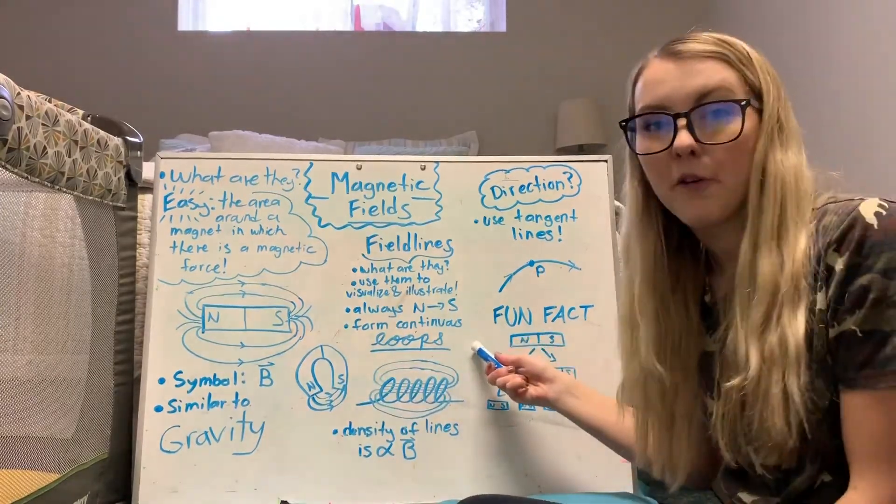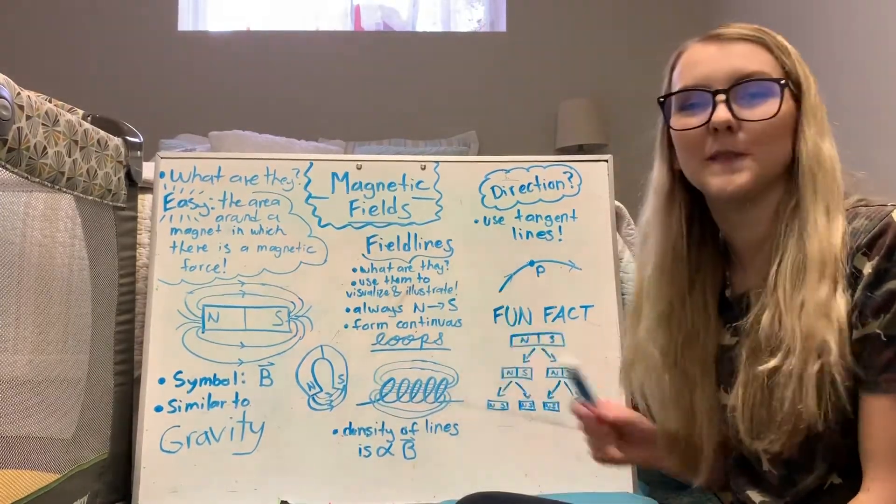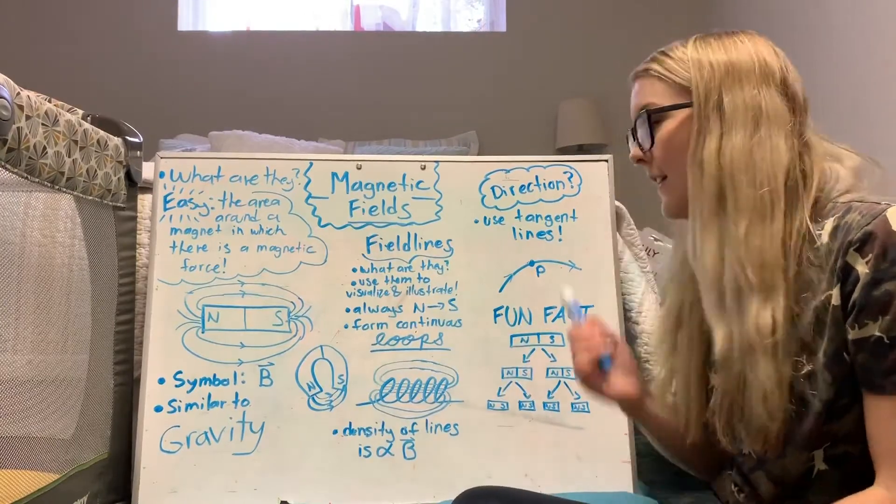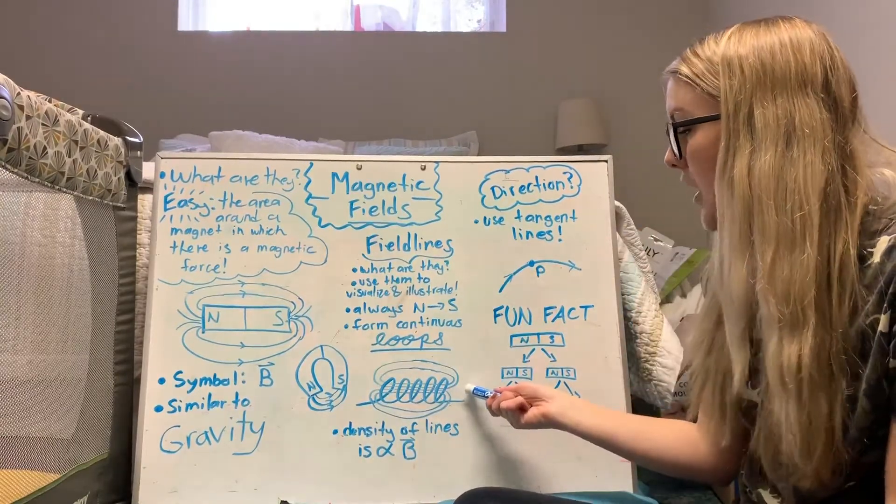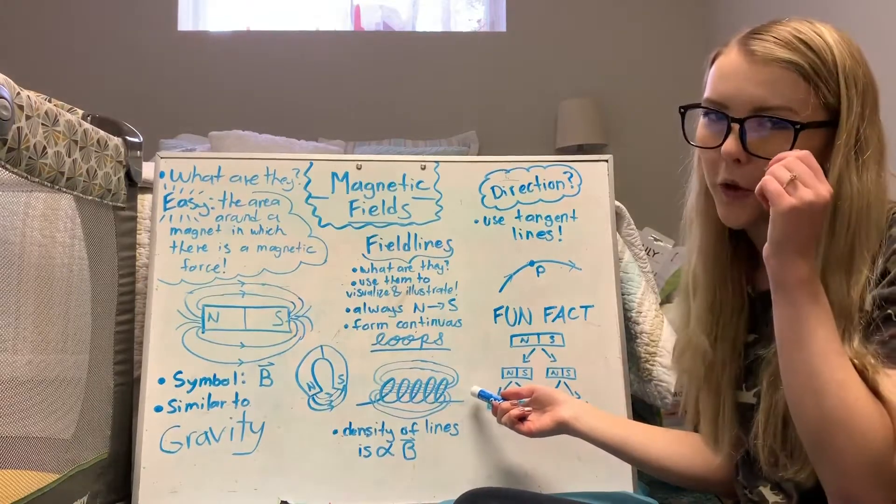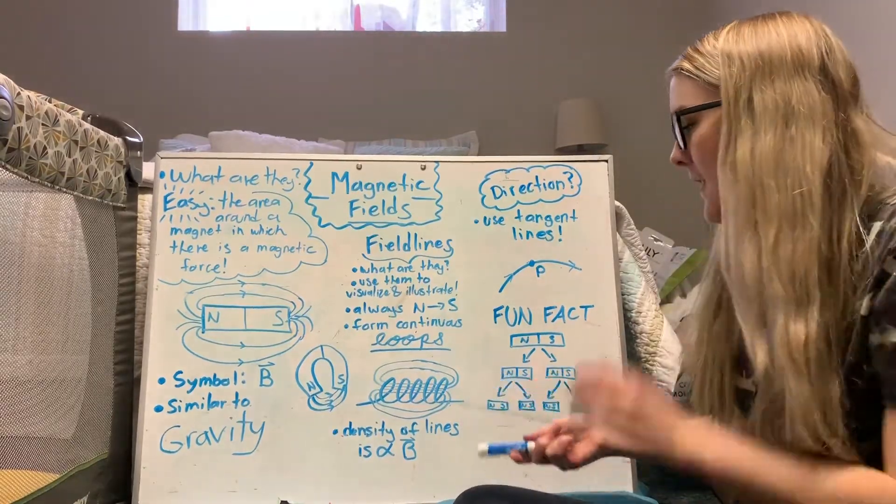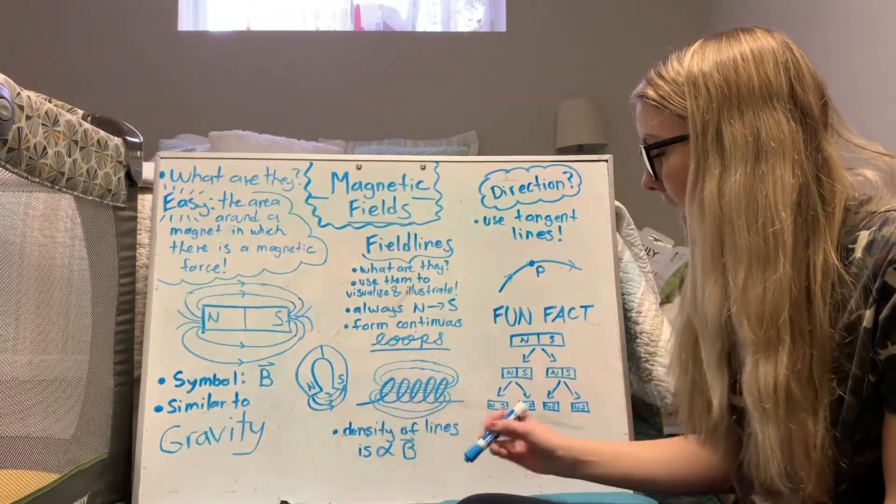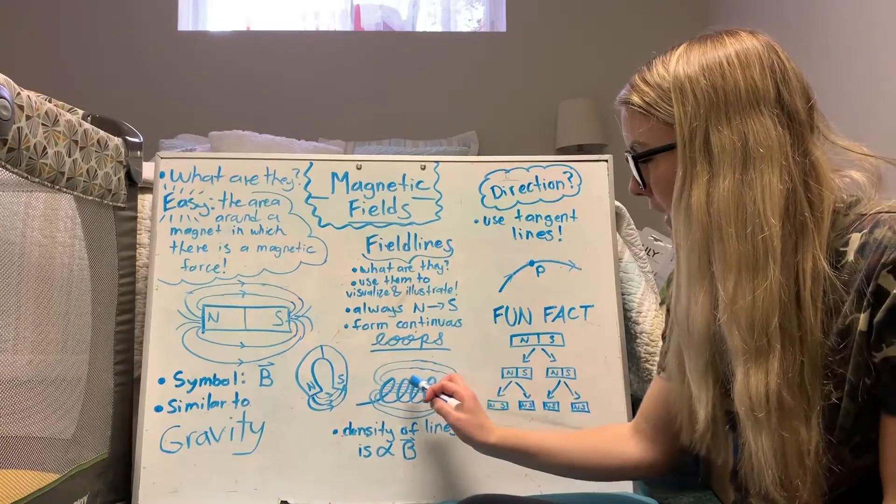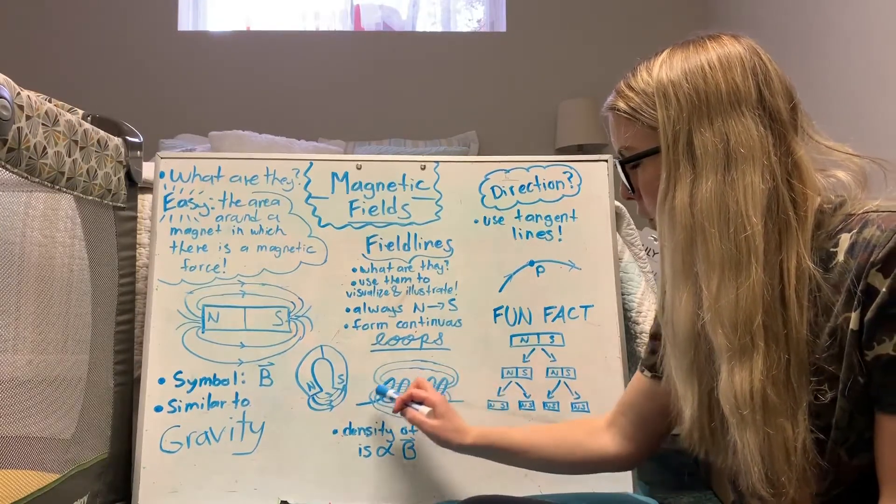And then another really important thing about field lines is that they're continuous loops, they don't have any beginning or end. So I've drawn a solenoid right here and a solenoid is basically just a coil of wire. You can see that the field lines actually form a loop and they go right through the center of those coil of wires.